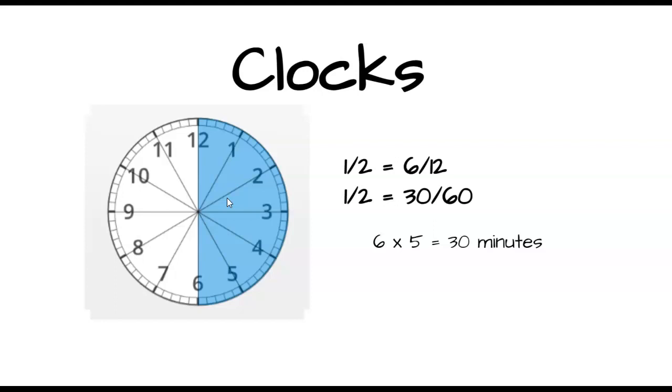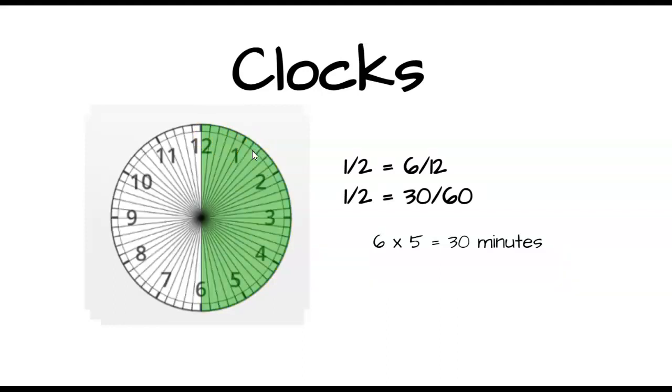And if we really want to do it and go into these little tiny minutes, we can. And we can partition it into 30 minutes for this. Or we can just say that we know 6/12, 6 times 5 gives us 30. So maybe we should just keep with that.